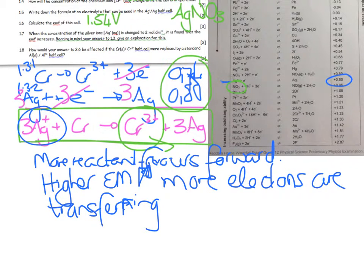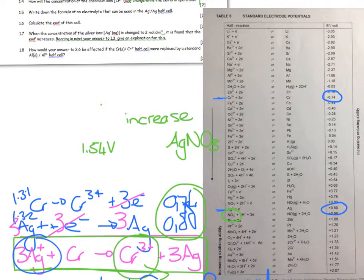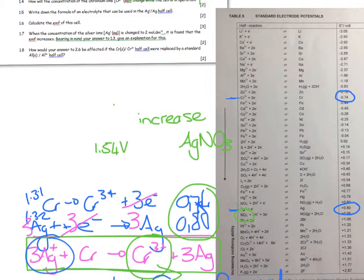How would your answer be affected if the chromium half cell was replaced by an aluminum half cell? We need to find aluminum quickly on this table. It's all the way up here, which means it's higher up than chromium. There's a bigger difference between aluminum and silver than chromium and silver. It has a more negative reduction potential, so you'll have a bigger EMF for that half cell.